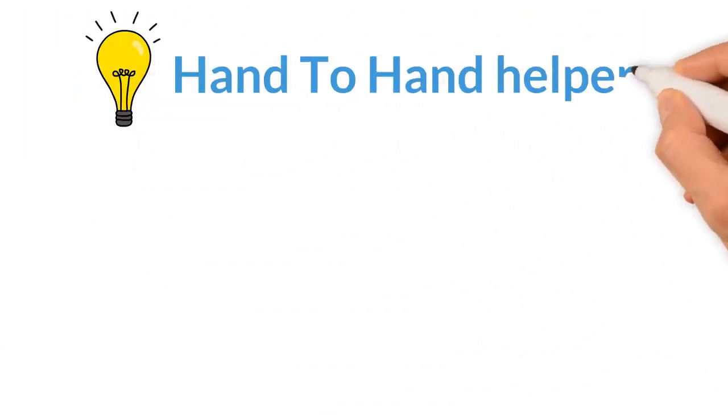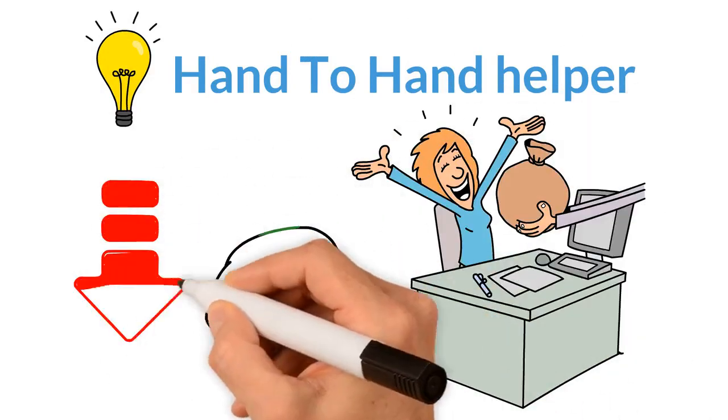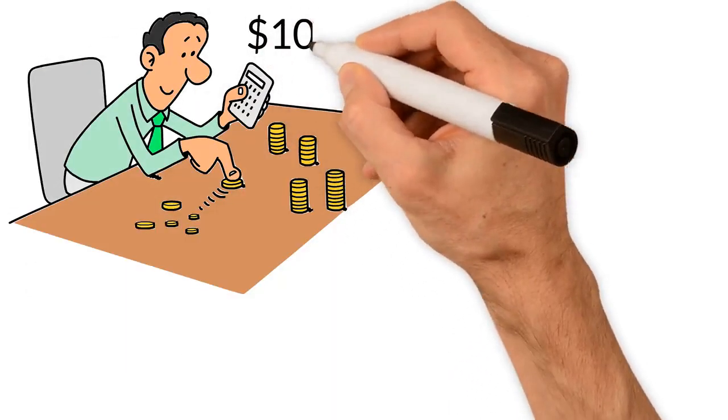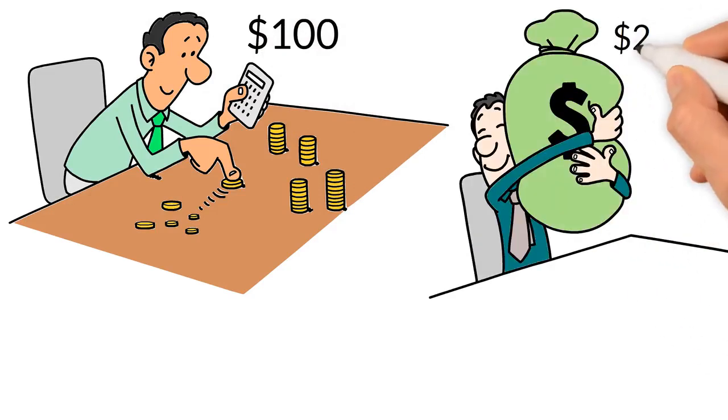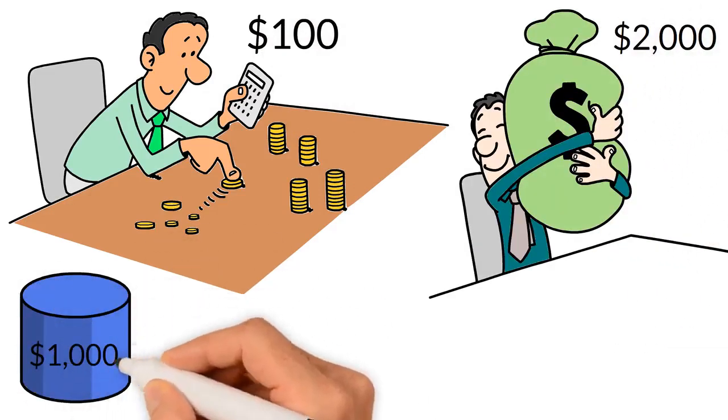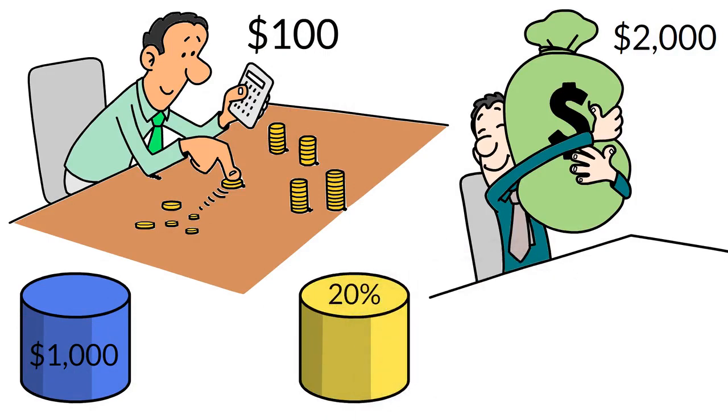A unique feature of Hand-to-Hand Helper is you can receive larger contributions if you're at a lower contribution level. Let's take another example of a person who can afford to contribute only $1,000 and receives a contribution of $2,000. He would receive $1,000 from Pool 1 and 20% of the $1,000 in Pool 2, which would be $200, for a total of $1,200.